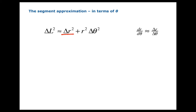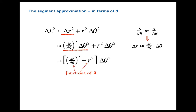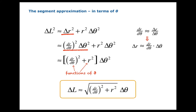dR/dθ, the derivative of R with respect to theta, should be approximately equal to the change in R over the change in theta — the tangent slope of a function should approximately equal the secant slope if your delta is small enough. That tells us that delta R should be approximately equal to dR/dθ times delta theta. We plug that right into the formula and factor out the delta theta squared. Notice that dR/dθ and R are both functions of theta — everything is a function of theta — and we can take the square root. And there's our approximation for a little bit of arc length.